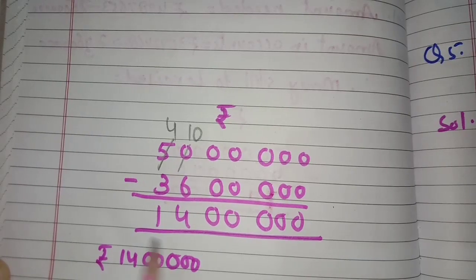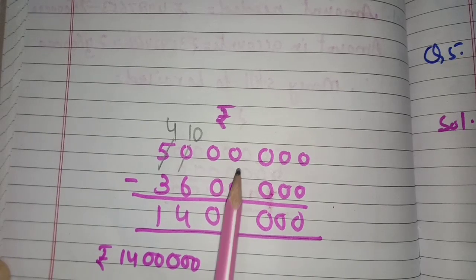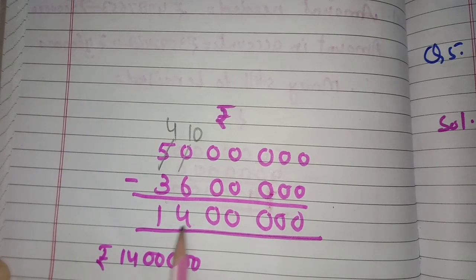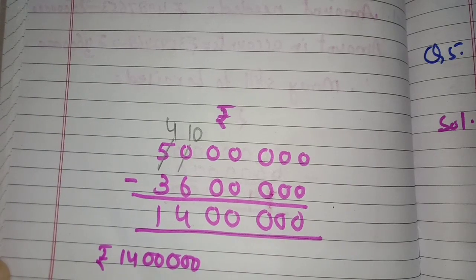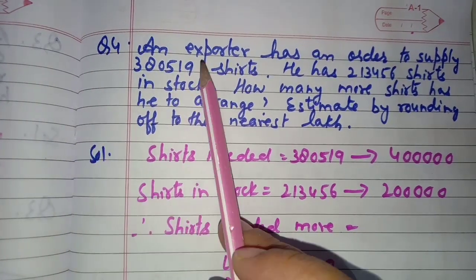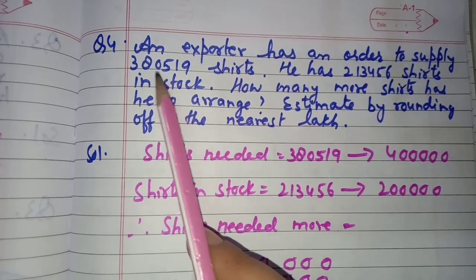Money still to be raised: 50 lakh minus 36 lakh = 14 lakh. The school still has to raise rupees 14 lakh. Question number 4: An exporter has an order to supply 3,80,519 shirts but has only 2,13,456 shirts in stock. How many more shirts does he need to arrange? Estimate by rounding off to the nearest lakh.